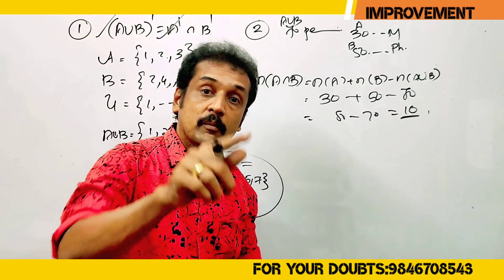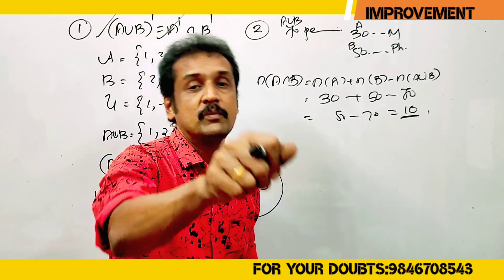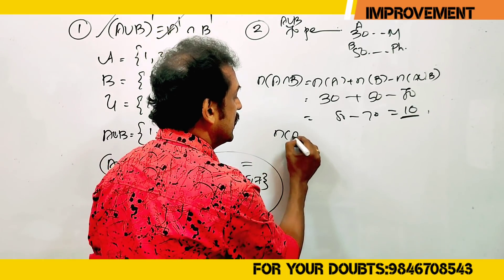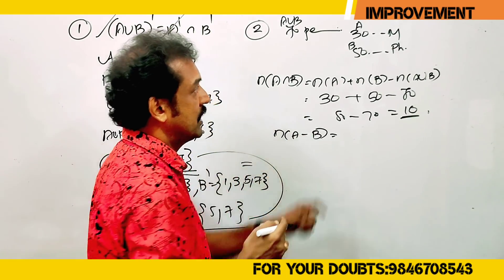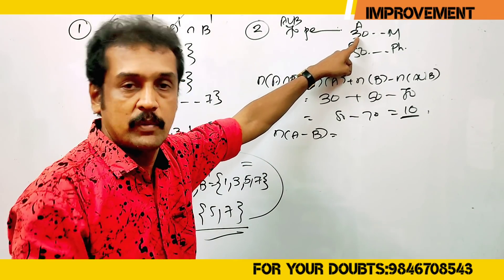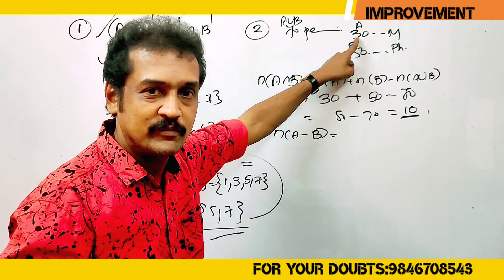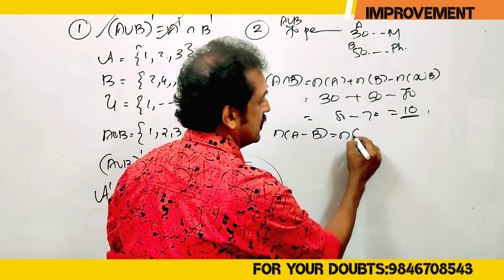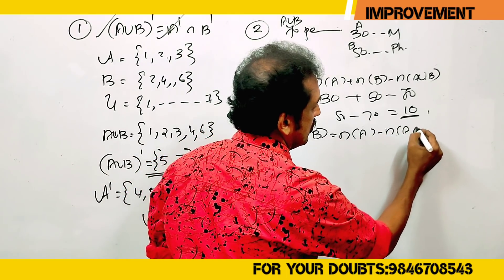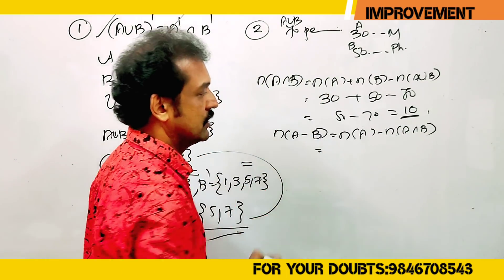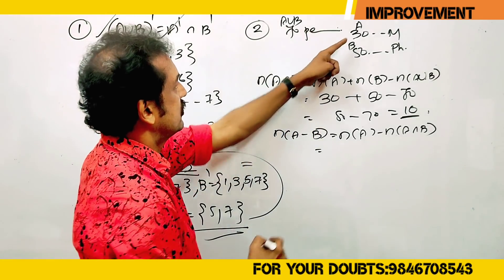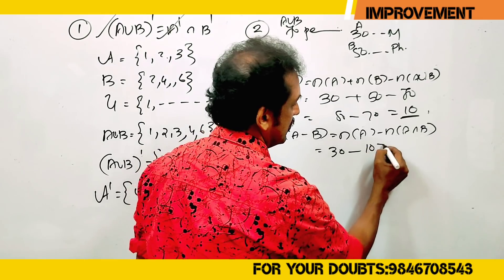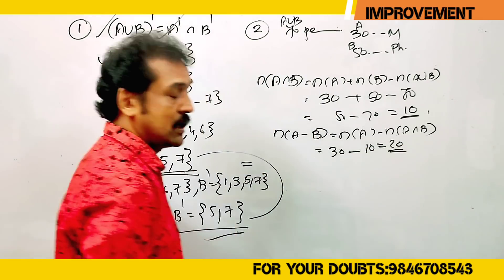Now we will use the table. What is n(A minus B)? The formula is n(A) minus n(A intersection B). So n(A minus B) equals 30 minus 10, which is 20.